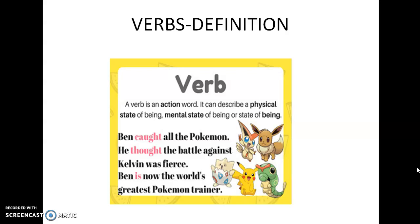Verbs include action words which include physical actions like running, eating, drinking. Then mental state, which includes actions where your body is not visibly moving, like thinking, sleeping, dreaming. Then you have state of being, which includes the helping verbs or auxiliary verbs that help the main verb perform the action. Auxiliary verbs include be verbs: is, am, are, was, were; have verbs: have, has, had; do words: do, does, did; and the modals, which include words like should, shall, could, might, must.